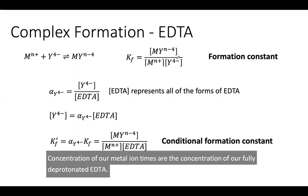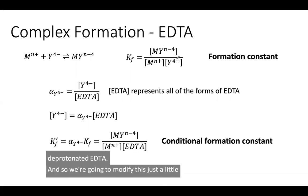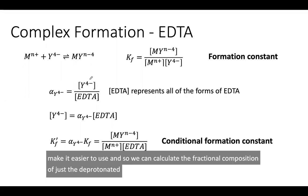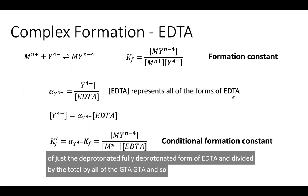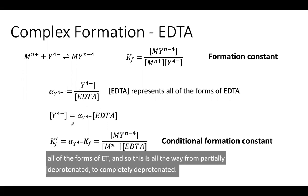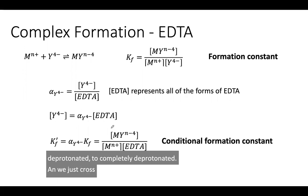We're going to modify this to make it easier to use. We can calculate the fractional composition of just the fully deprotonated form of EDTA, alpha Y4-, and divide it by the total, by all of the EDTA. Here EDTA is going to represent all of the forms of EDTA, from partially deprotonated to completely deprotonated.